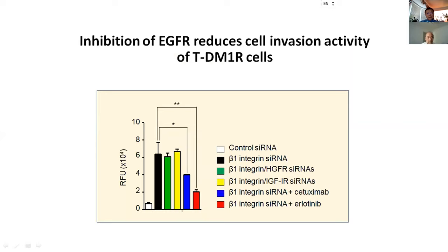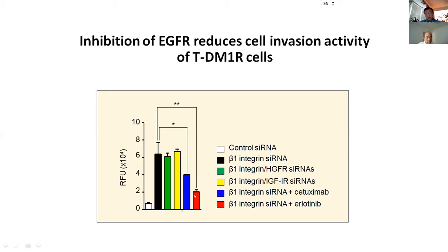What happens if we inhibit EGF receptor? Beta-1 knockdown-increased invasion activity can be downregulated by the EGFR-targeting antibody cetuximab, which binds to domain 2 of the EGF receptor extracellular domain and blocks EGF receptor dimerization. Another agent, erlotinib, is a kinase inhibitor for EGF receptor. As you can see from the slides, invasion activity is reduced. Those TDM1-resistant cells appear to be more sensitive to kinase inhibitor.